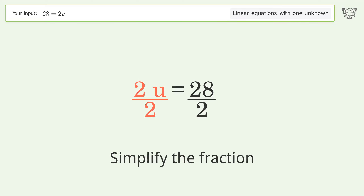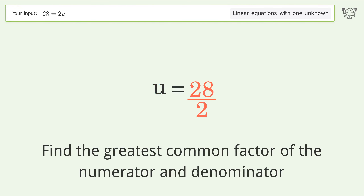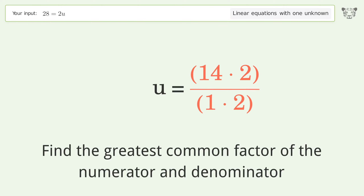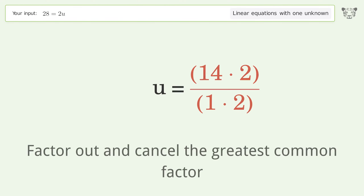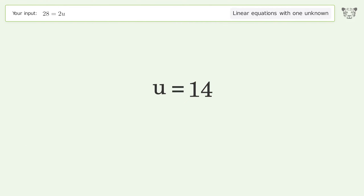Simplify the fraction by finding the greatest common factor of the numerator and denominator. Factor out and cancel the greatest common factor. And so the final result is u equals 14.